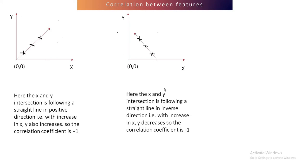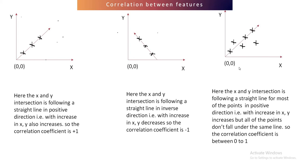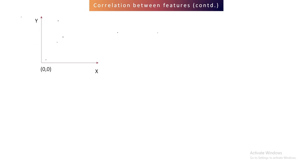In the second scenario, the x and y intersection follows a straight line in an inverse direction — with an increase in x, y decreases — so this correlation coefficient is minus one. In scenario three, the x and y intersection follows a straight line for most points but not all. So we can say x and y have a positive correlation, but since not all points fall on the straight line, the correlation is not plus one; it will be somewhere between zero and one.